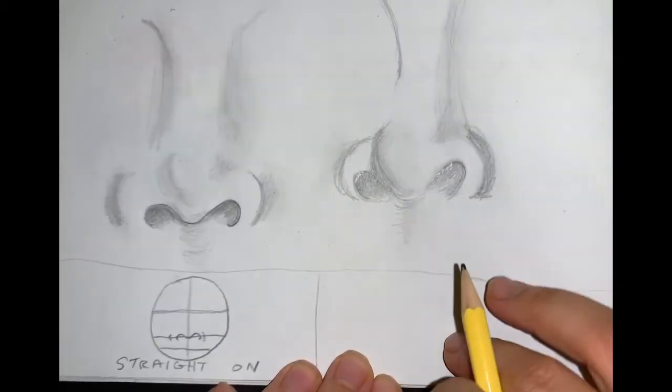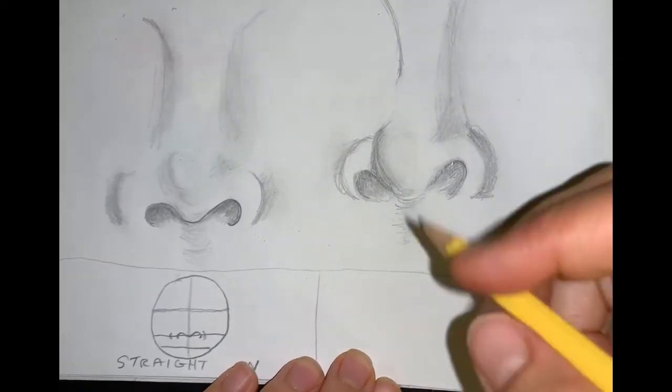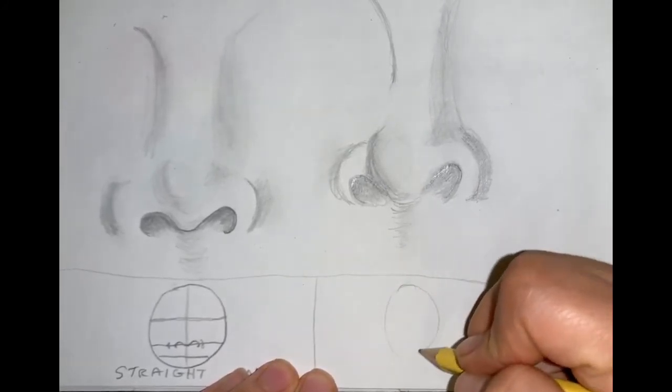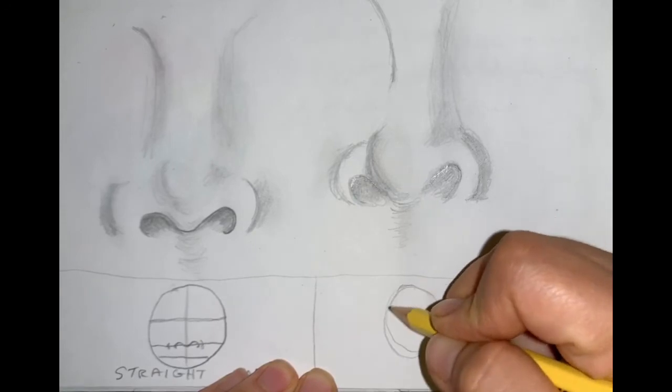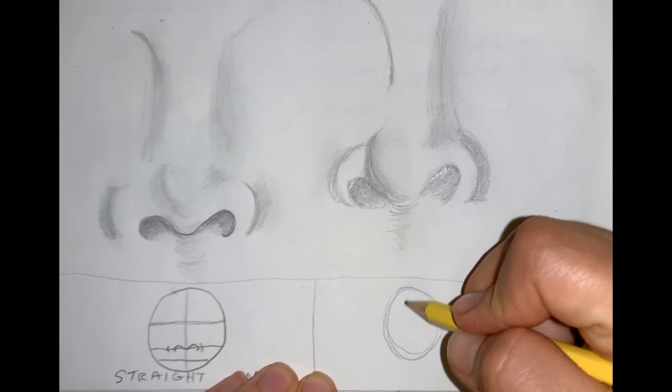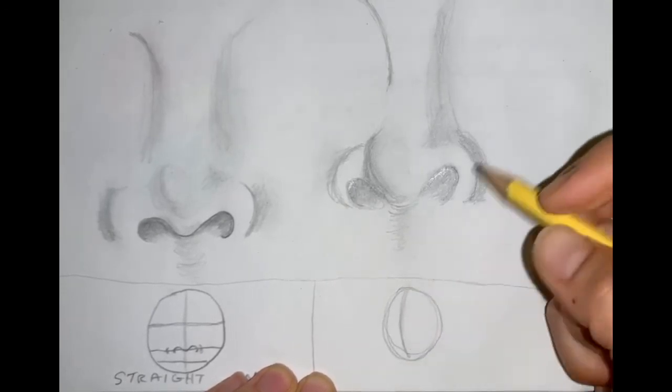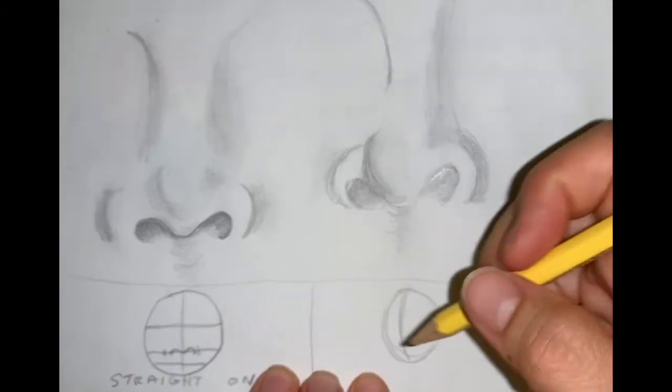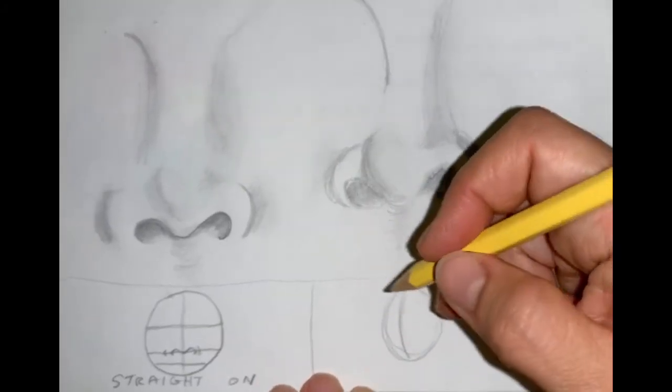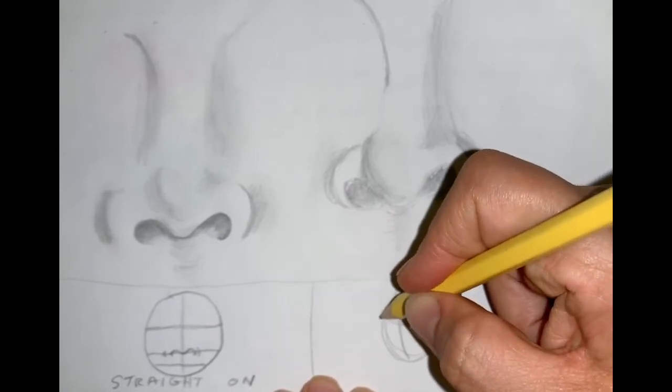The three-quarters nose has a slightly different situation. The head is turned at a slight angle, so we're going to draw the oval here. I'm going to draw a curved line in the direction that the nose is facing. Again, I will break this in half just like I did with the straight-on view.